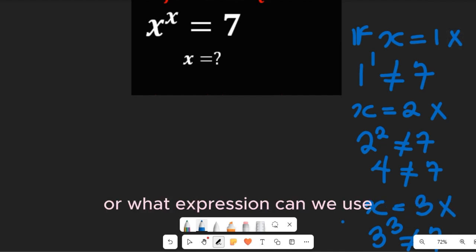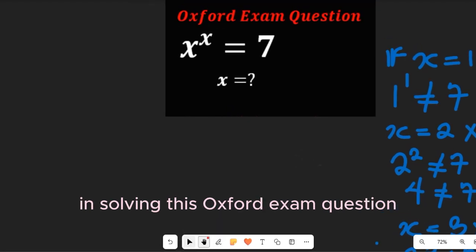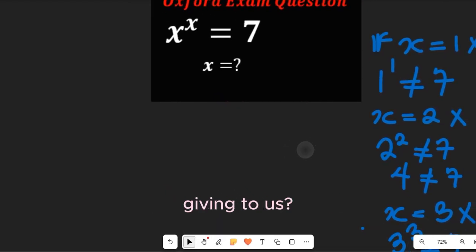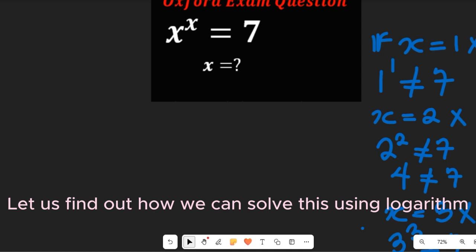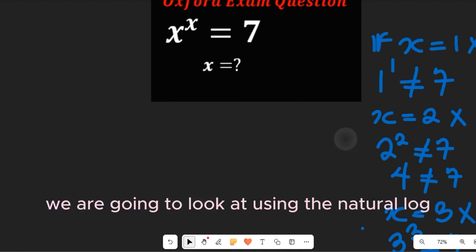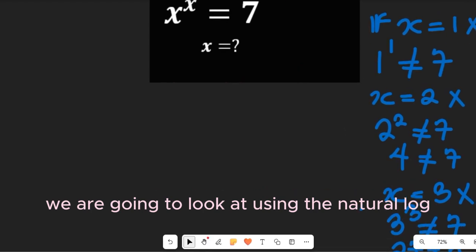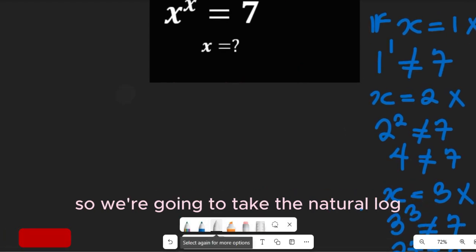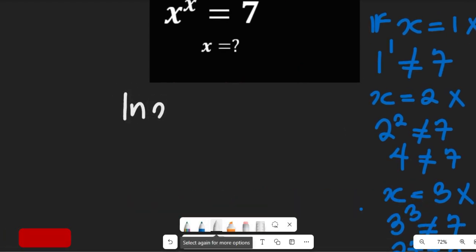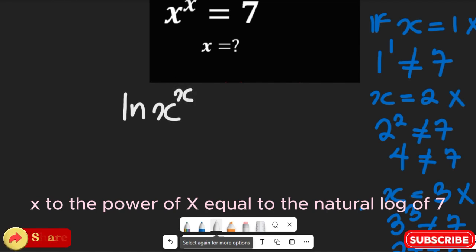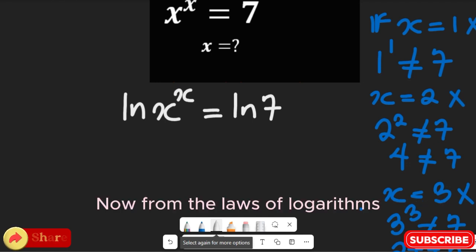So what real value or expression can we use in solving this Oxford exam question? Let's find out how we can solve this using logarithm. We're going to use the natural logarithm — taking the natural log of x to the power of x equal to the natural log of 7.